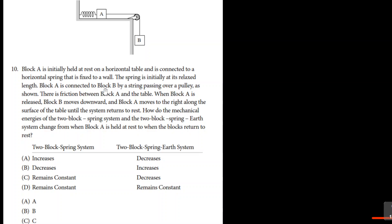Block A is connected to Block B by a string passing over the pulley. There's friction between A and the table. Interesting. Block A is released, B moves downwards, A moves to the right along the surface of the table until the system returns to rest. How do the mechanical energies of the two-block spring system and the two-block spring earth system change from when Block A is held at rest to when the blocks return to rest?